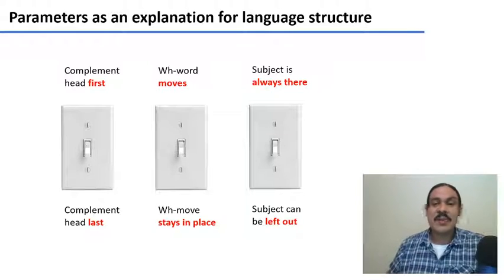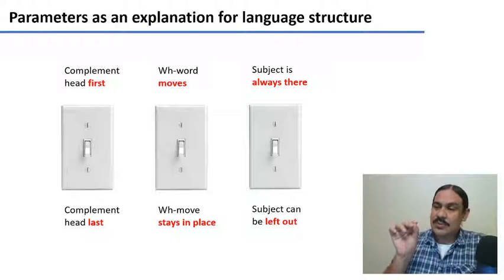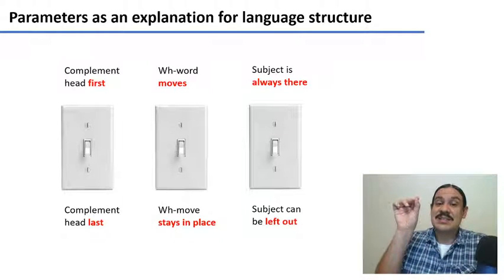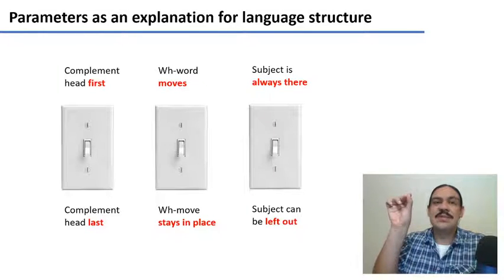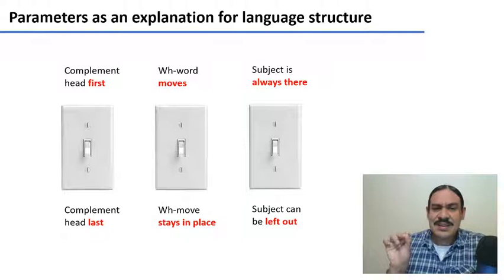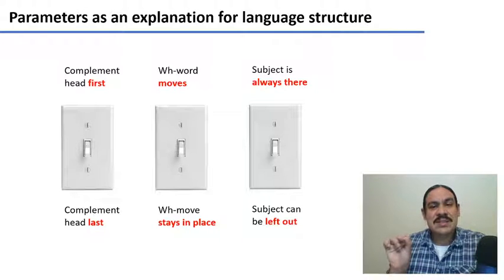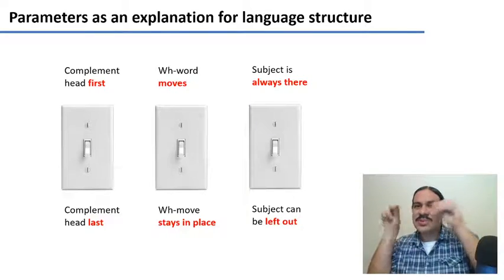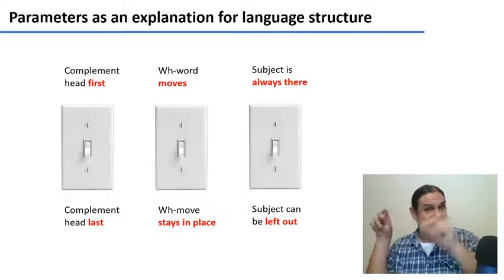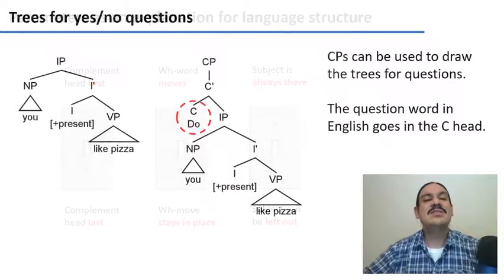We're going to look at a third parameter, which is for whether you always need a subject in a sentence or whether you can leave it out. In English, you always need a subject, even if it's a dummy subject that doesn't do anything, as in 'it rains'. On the other hand, there are languages like Spanish, where you can practically drop any subject under the right conditions. So flipping these switches would explain differences between languages.